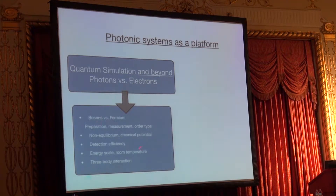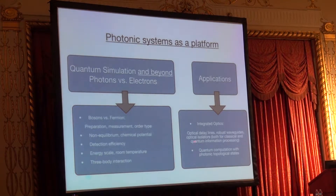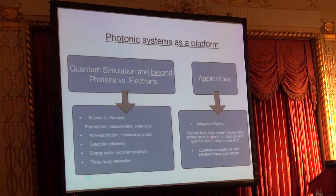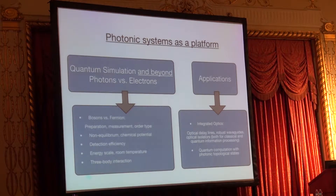Once we actually understand these systems, we might be able to use them and think of some applications. In particular, in this talk I will show how some of the robustness we expect in topological systems can improve optical delay lines — basically make robust optical delay lines. And can we think of, for example, optical isolators, etc., that are important in photonics on a chip.